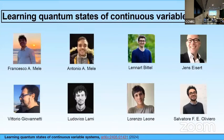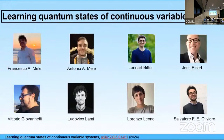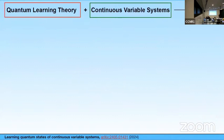The last talk of today's afternoon session is on learning quantum states of continuous variable systems, and we have the pleasure to hear from Francesco Mele about this. This work was possible thanks to the huge effort of a wonderful team: Antonio Annamele, my twin brother, Leonard Bittel, Jens Eysert, Vittorio Giovannetti, Ludovico Lami, Lorenzo Leone, and Salvatore Oliviero. This talk is based on two main topics: quantum learning theory and continuous variable systems.